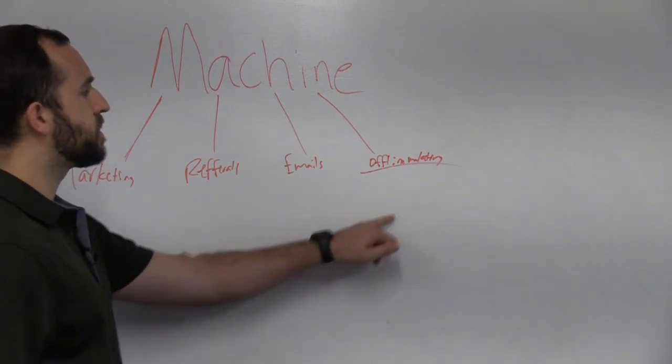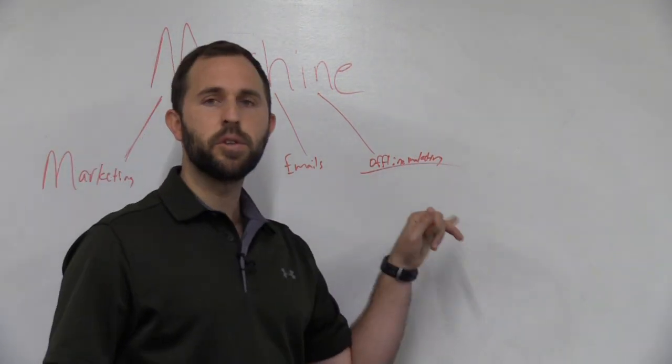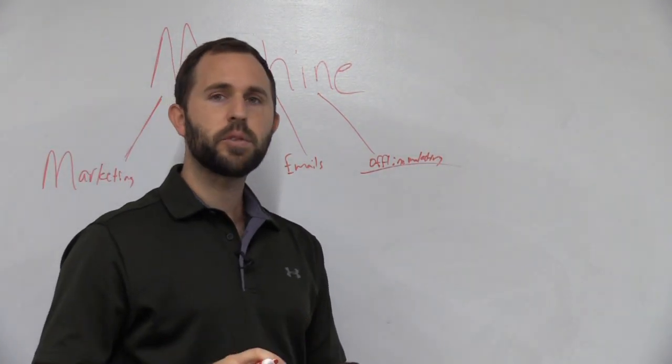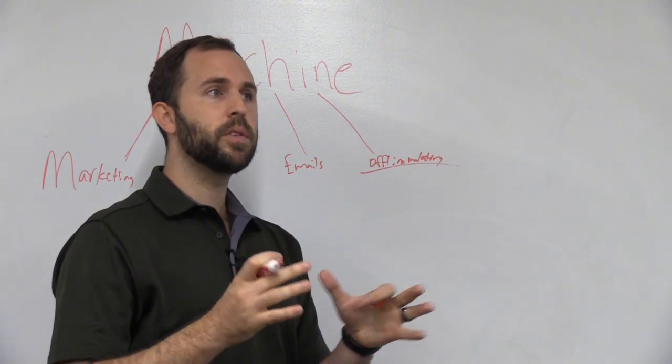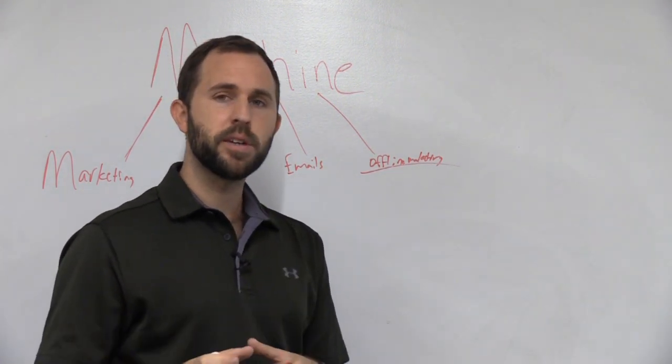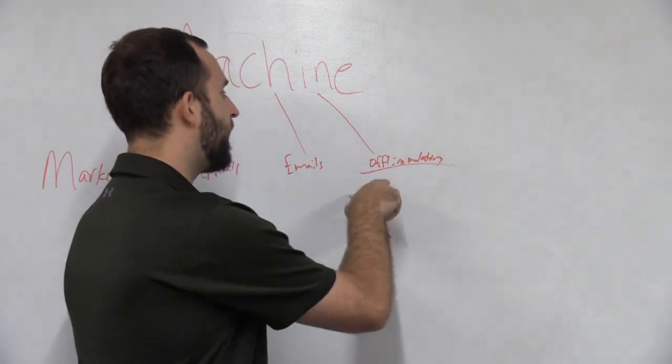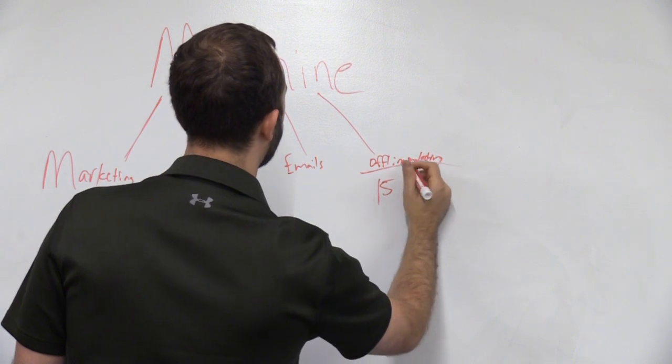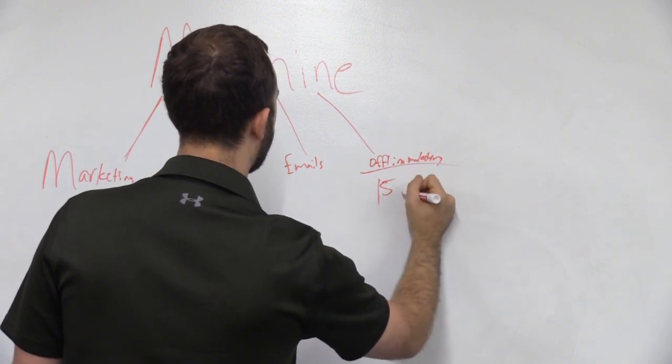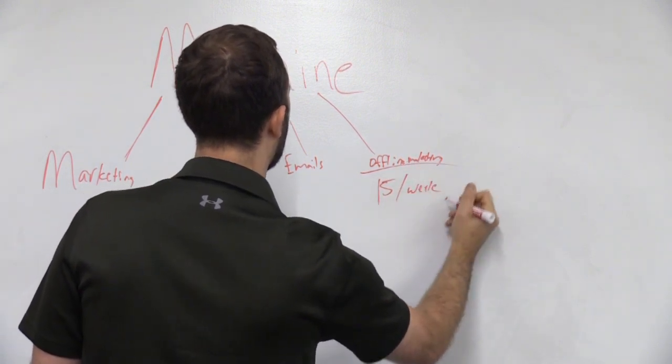And here, this is something I teach all the coaches in our mastermind. You should be getting in contact with at least three parents or three coaches, whoever that have influence over kids, daily. That's 15 a week, 15 people of influence per week.